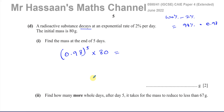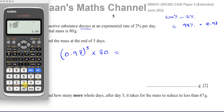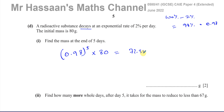Each day the mass is 98% of the previous day's mass. At the end of day one it's 0.98¹ × 80, day two is 0.98² × 80, and so on. At the end of five days: 0.98⁵ × 80 = 72.3136... Rounded to 3 significant figures, the answer is 72.3 grams.